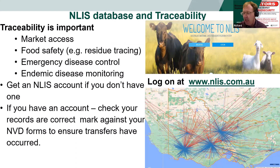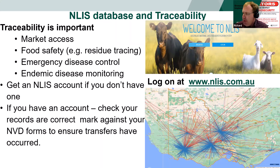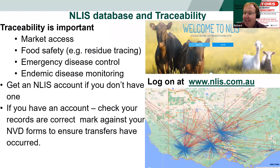Getting an NLS account is relatively easy — you can log on and register online. The reason that's important is illustrated by the picture of sheep movements for just one particular day. Blue represents movements into saleyards and red represents movements out of saleyards, and as you can see, for just one day these are the movements that occurred.